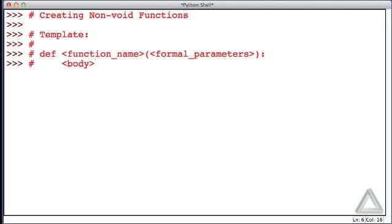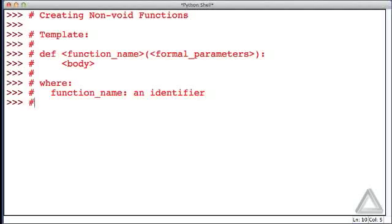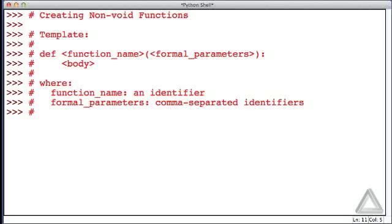And then there is the body of the function. So let's explain these terms a little bit more. When it comes to this function name, that's just simply an identifier, any valid identifier. For the formal parameters, that's comma-separated identifiers, and then the body is any number of indented statements.